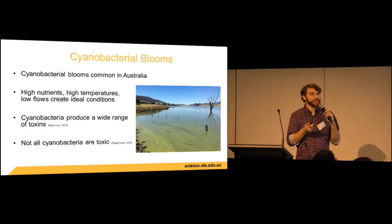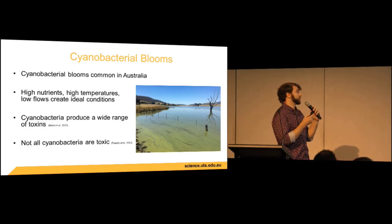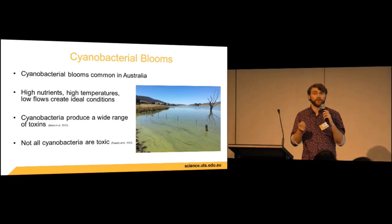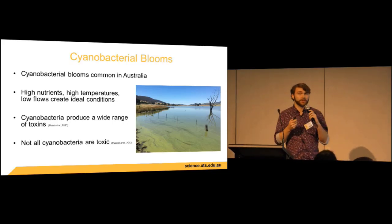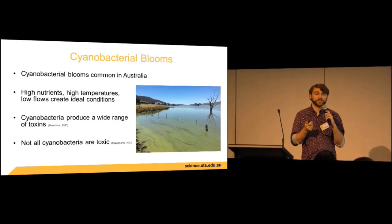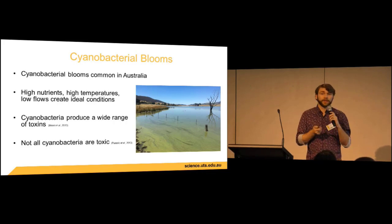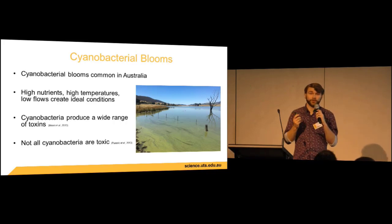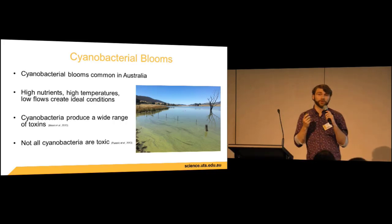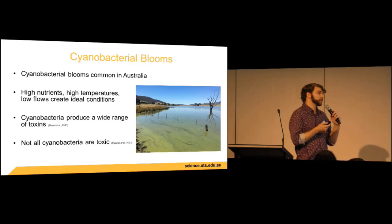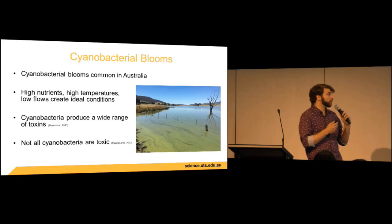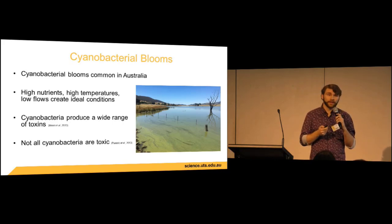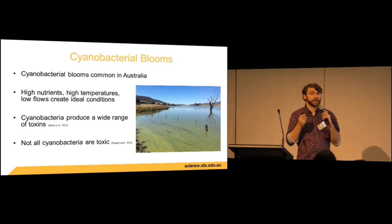These blooms are such an issue because cyanobacteria are known to produce a wide array of different types of toxins. These toxins include the hepatotoxins such as the microcystins which affect your liver, the neurotoxins such as the saxitoxins which affect your neurons, and also the dermatotoxins such as lyngbyatoxin A which affect your skin. However, not all cyanobacteria are toxic — within a species there are strains that can and cannot produce these toxins.